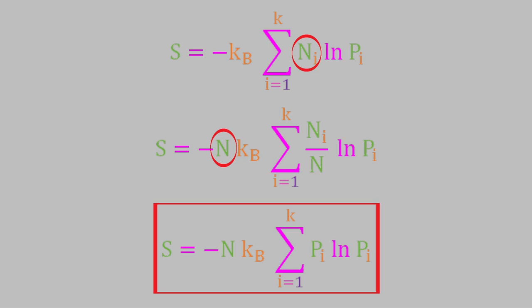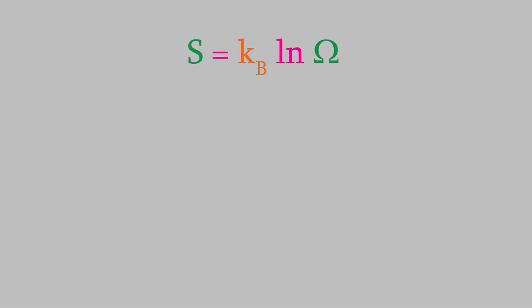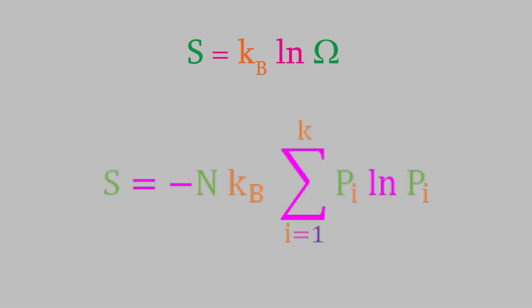This is a really important and useful result. By starting with Boltzmann's equation and using probability theory and Stirling's approximation to simplify it, Josiah Gibbs derived this result, which is much easier to use than the original equation, because we don't need to take factorials of enormous numbers like omega.